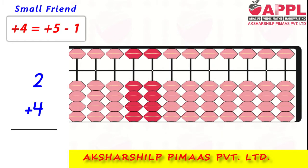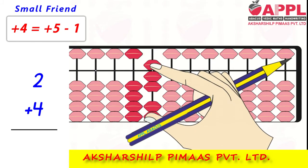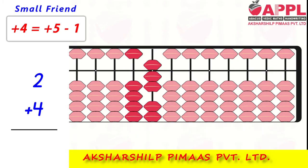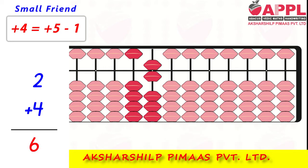Next, 2 plus 4. Addition of 4: bring 5 less 1. That is 6.